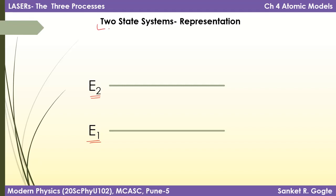When we say it is a two-state system, there could be many other energy levels, but we are focusing our discussion on these two energy states E1 and E2. In the context of lasers, which are manufactured by humans, we can choose any two energy levels in a given system and focus our discussion on those two levels. That is what this diagram means.